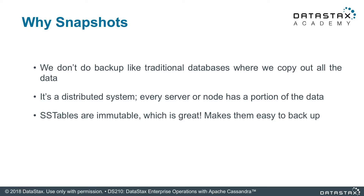Snapshots are how we do backups. Snapshots are files we create based on the SSTables. One of the really cool things about a Cassandra SSTable is that it's immutable — it's never going to change again. If you write it out to the file system, you can guarantee it's going to stay that way. If you've ever done backups on relational databases, you know that open files were one of the big problems: the database is trying to write to a file and you can't touch it because it's open. SSTables are written and done.